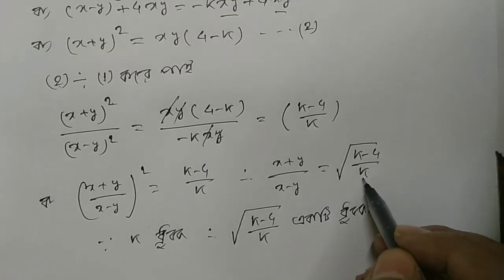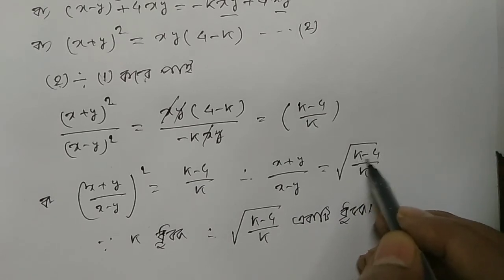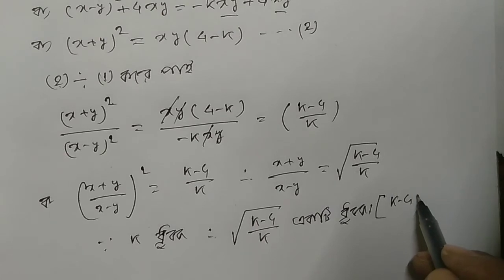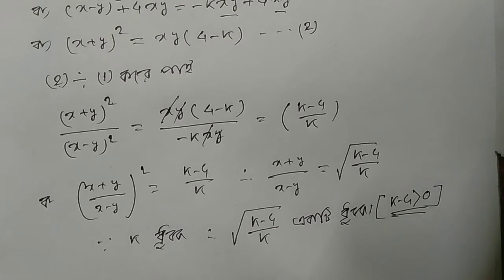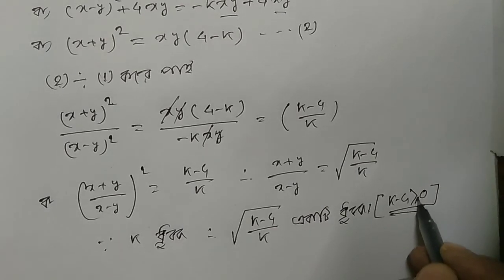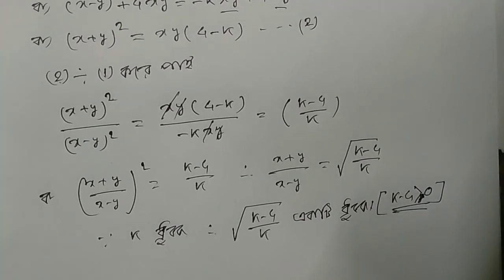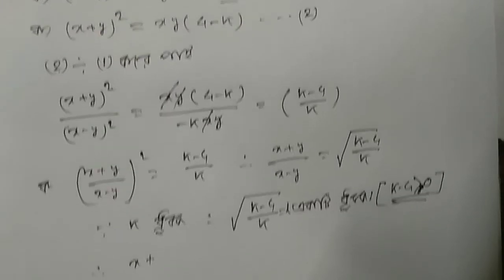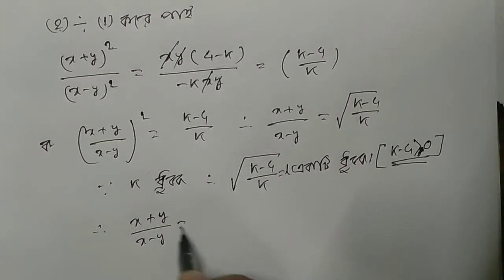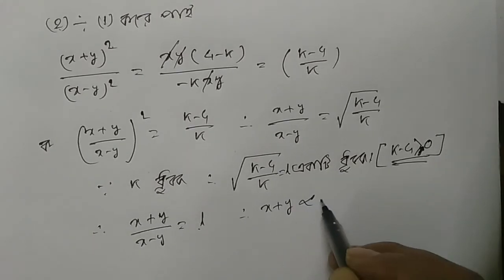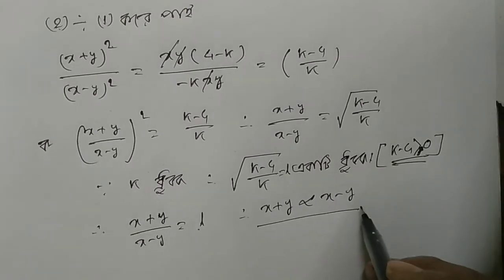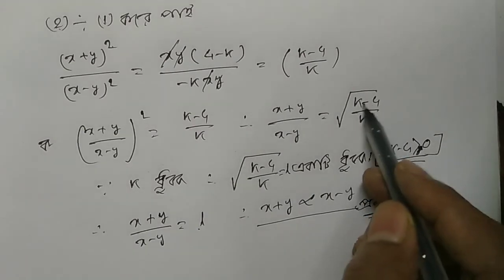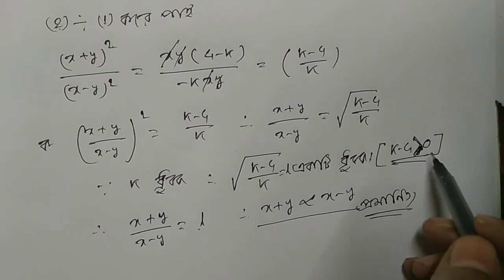Now if k minus 4 is negative, the square root would not be real. So k minus 4 must be positive, meaning k minus 4 is always positive and not equal to zero. This means k must be greater than 4. Since the ratio u/v equals a constant — the square root of (k minus 4)/k — we conclude that x plus y varies as x minus y.